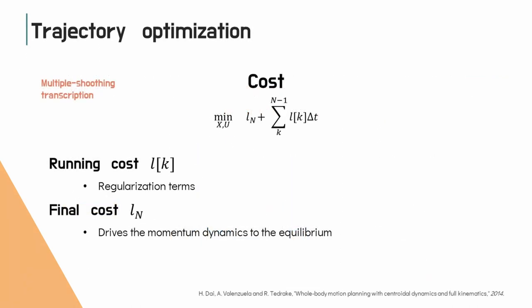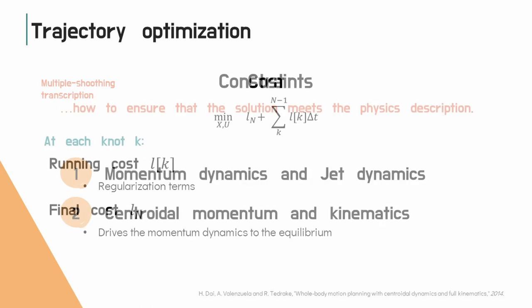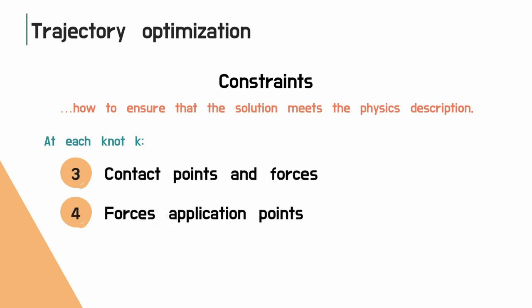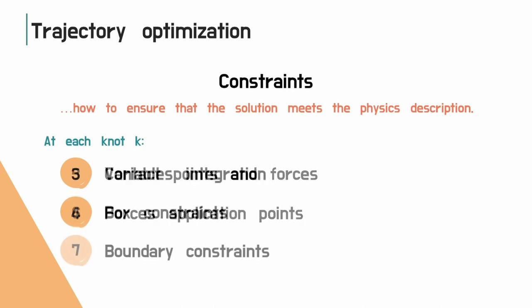We transcribed the trajectory optimization problem using a multiple shooting method. The cost is defined mainly using regularization terms and equilibrium driving costs. The constraints ensure that the solution meets the defined physical description, and are defined using the previously introduced model formulations.